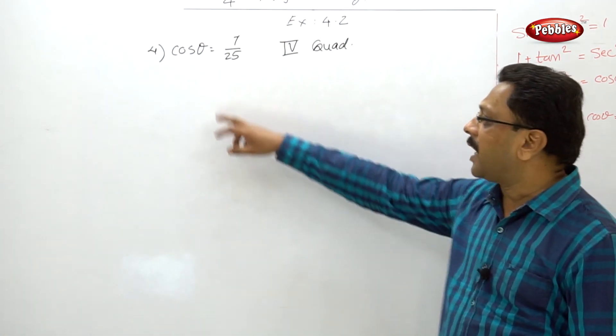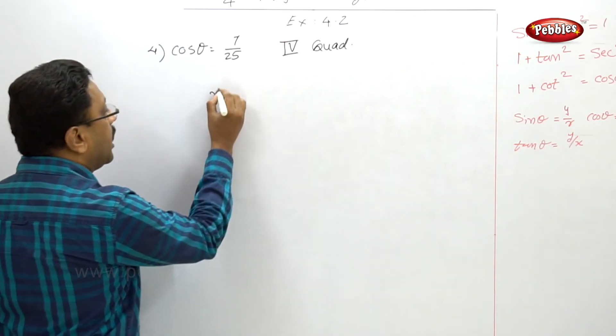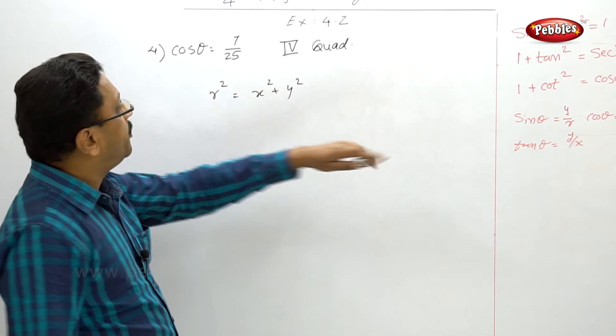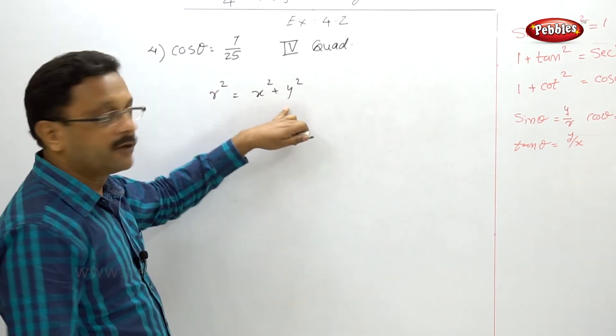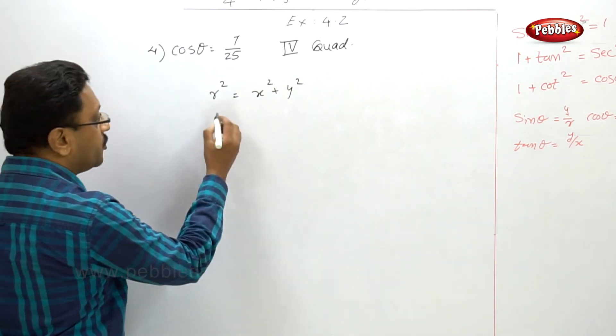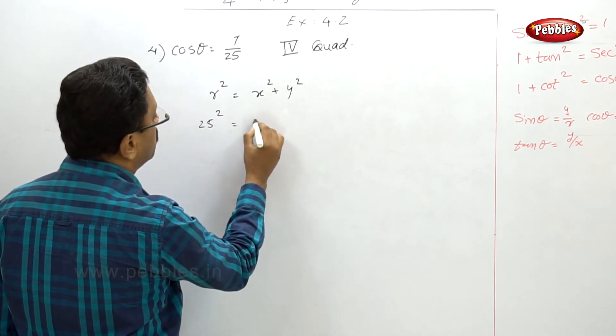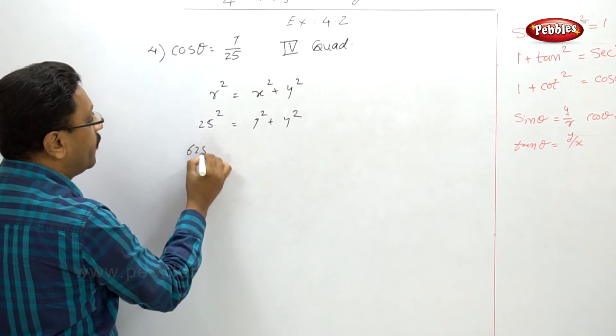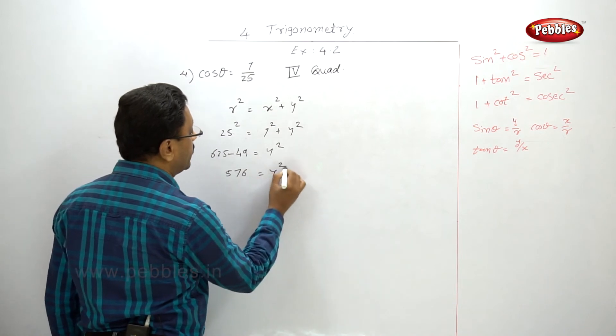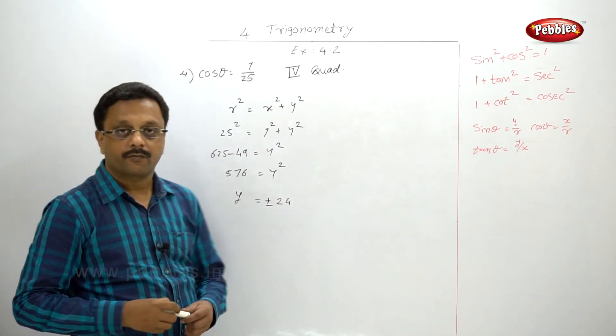How will you solve this problem? This is very simple. You know that cos θ is nothing but x/r, and we know that r² = x² + y². As it is x/r, we know the value of x and r. We have to find out the value of y so that we can find out the other identities also. Now, r² = 25² = 7² + y², so 625 - 49 = y², 576 = y², so y = ±24.